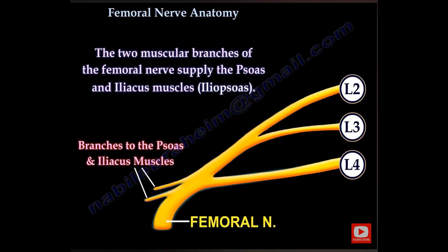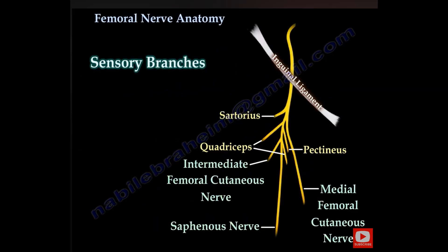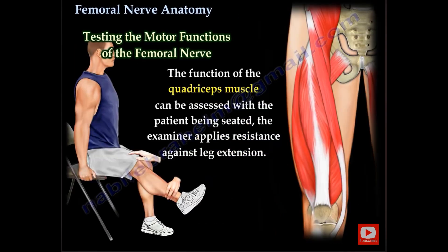Here is the femoral nerve, coming from L2, L3, and L4. Here are the branches of the femoral nerve — you can see the saphenous nerve is the longest branch of the femoral nerve. When the femoral nerve is affected, the quadriceps muscle will be weak and the patient will not be able to straighten the knee.